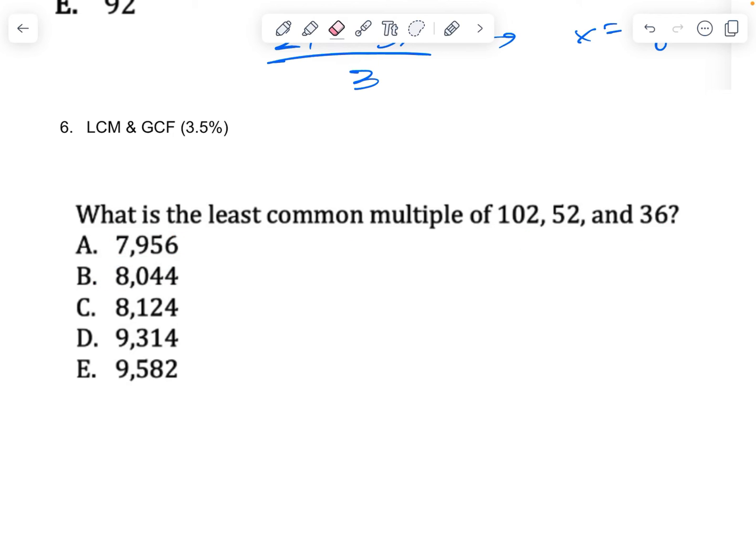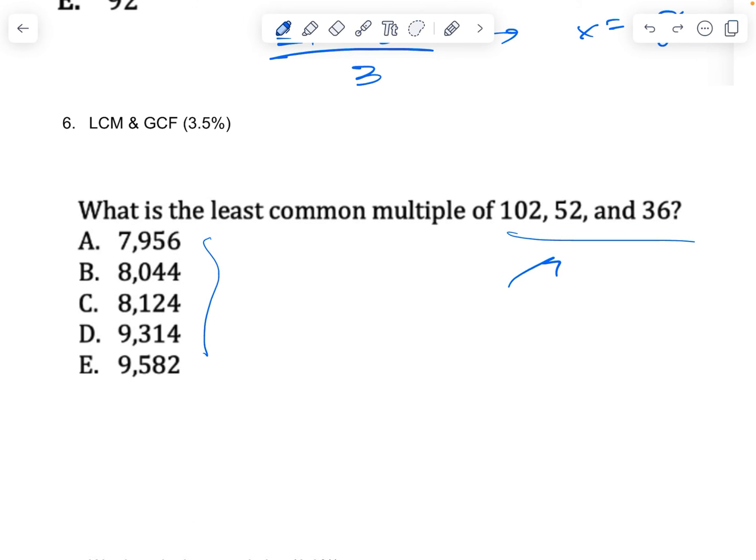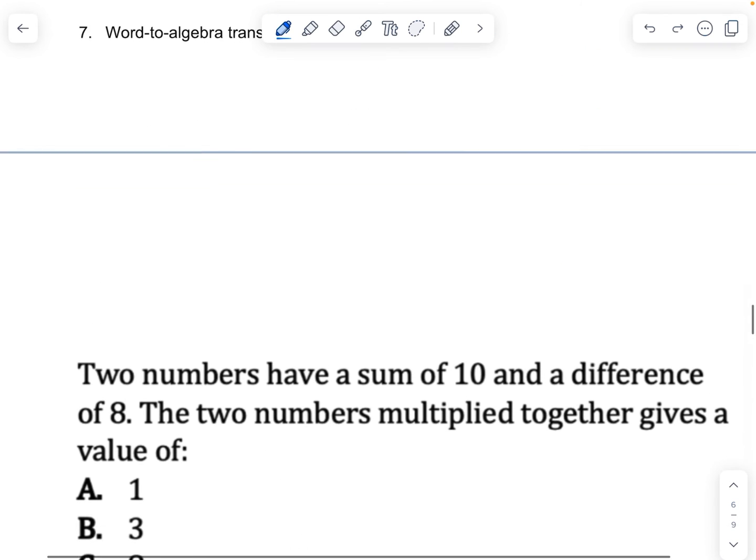If it was the greatest common factor problem, you do it in reverse. It would ask you what's the greatest common factor of these three numbers? And then all the answer options would be smaller than these three numbers. In that case, you would divide the numbers here by what's in the answer option. So it's kind of reverse. Remember, you're always dividing the larger numbers by the smaller ones and checking to see which one meets the criteria or is divisible.